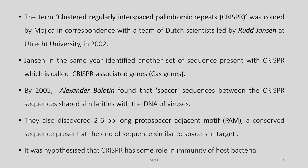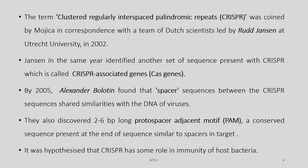The term Clustered Regularly Interspaced Palindromic Repeats — CRISPR — was coined by Mojica in correspondence with a team of scientists led by Ruud Jansen at Utrecht University in the year 2002. Jansen in the same year identified another set of sequences present with CRISPR, which he named as CRISPR-associated genes, or Cas genes. By 2005, Alexander Bolotin found that spacer sequences between the CRISPR sequences shared similarities with DNA viruses. They also discovered 2 to 6 base pair long protospacer adjacent motifs, or PAM — a conserved sequence present at the end of sequences similar to the spacer in the target. It was hypothesized that CRISPR has some role in immunity of host bacteria, although it was not understood exactly how.